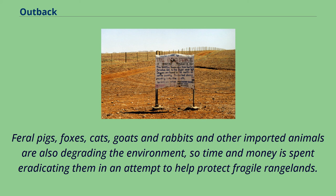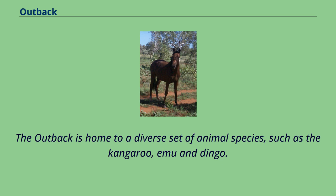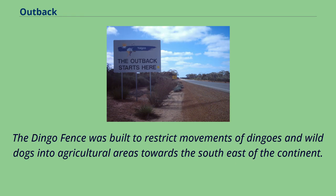Feral pigs, foxes, cats, goats and rabbits and other imported animals are also degrading the environment, so time and money is spent eradicating them in an attempt to help protect fragile rangelands. The outback is home to a diverse set of animal species such as the kangaroo, emu and dingo. The dingo fence was built to restrict movements of dingoes and wild dogs into agricultural areas towards the southeast of the continent.